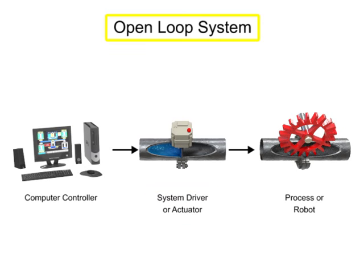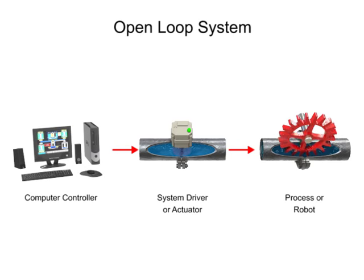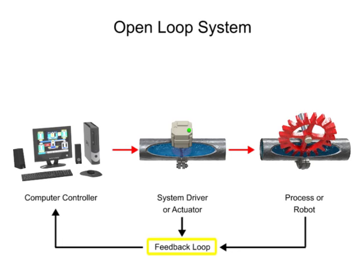In open-loop systems, the program length of time the signal is applied, as well as the integrity of the signal, are critical for ensuring that the new operation is completed. This is because there is no feedback to the computer from the system driver or the robot, and thus no updates to the signal outputs can be made.